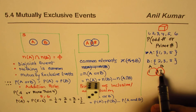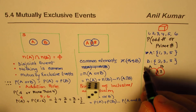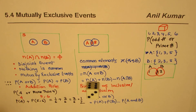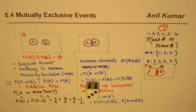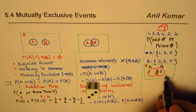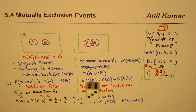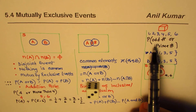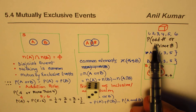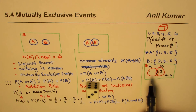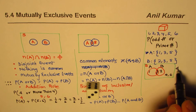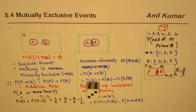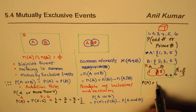In our sample space, set A contains {1, 3, 5} and set B contains {2, 3, 5}, with 3 and 5 in common. Numbers 4 and 6 fall outside both sets. The probability of rolling an odd number or prime number — since there are four distinct numbers {1, 2, 3, 5} — the answer is 4/6 or 2/3.